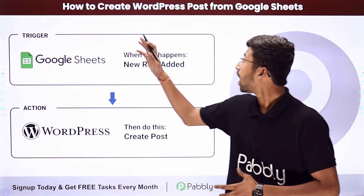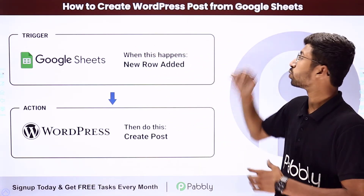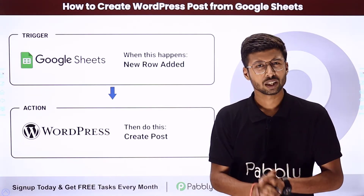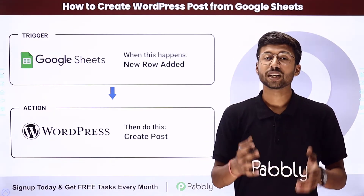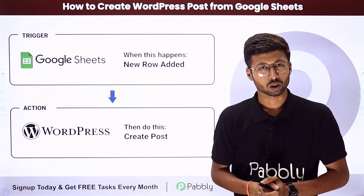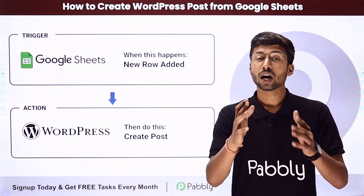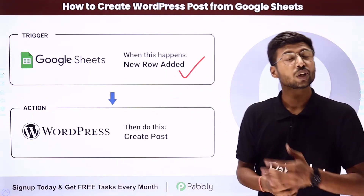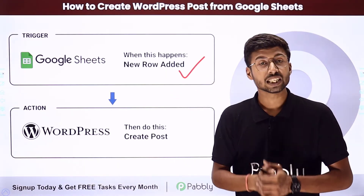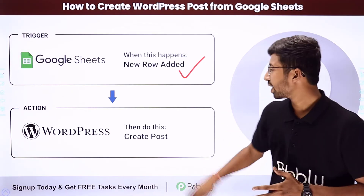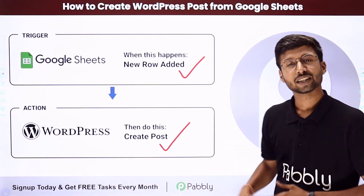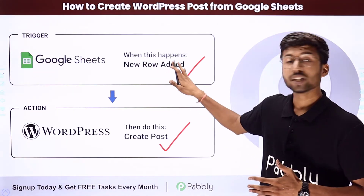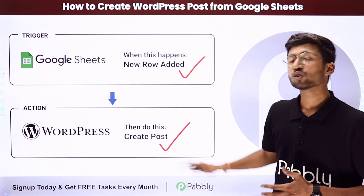In this video, we will learn how to create WordPress posts from Google Sheets. Suppose you are posting daily new blogs on WordPress and maintaining a Google Sheet to keep all the details and content of your blog. We will create an automation so that whenever we add a new row of content in Google Sheet, automatically the very same content will be shared as a new post on your WordPress site. The trigger of the automation will be the addition of a new row in Google Sheet, and the action will be the creation of posts in WordPress.